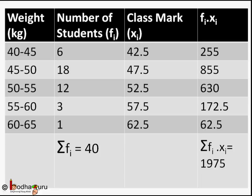But when the numerical values of xi and fi are large, finding the product of xi and fi becomes a lengthy and time-consuming process. So we have an alternative method for such cases which will save us a lot of calculations. It is called assumed mean method.